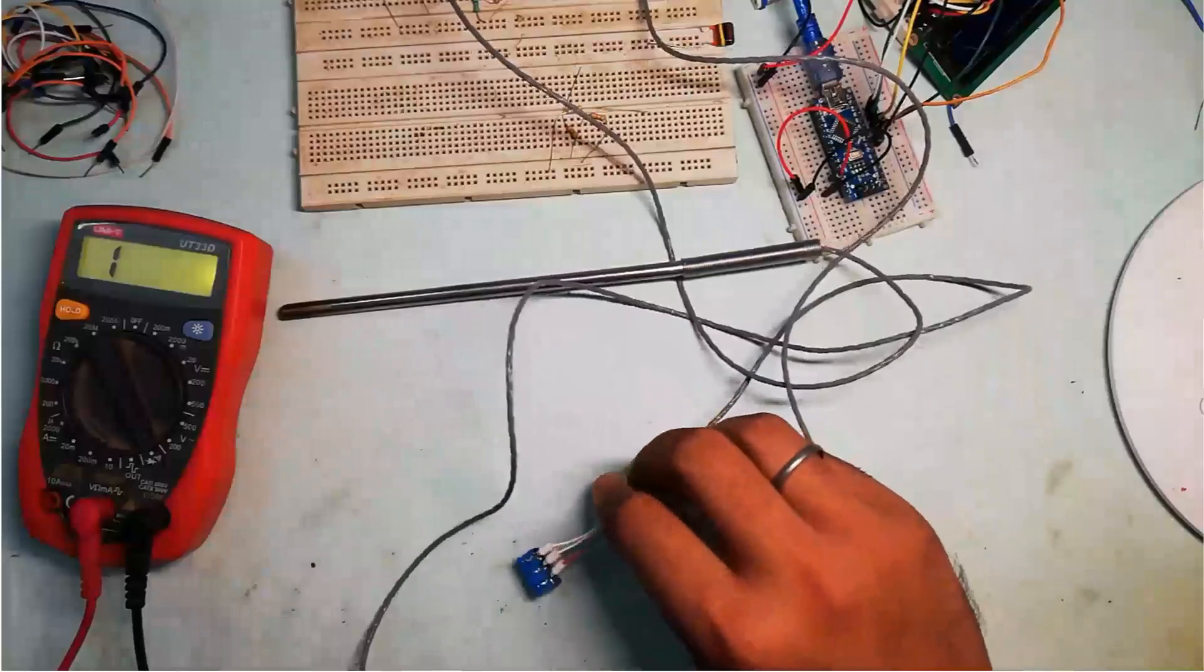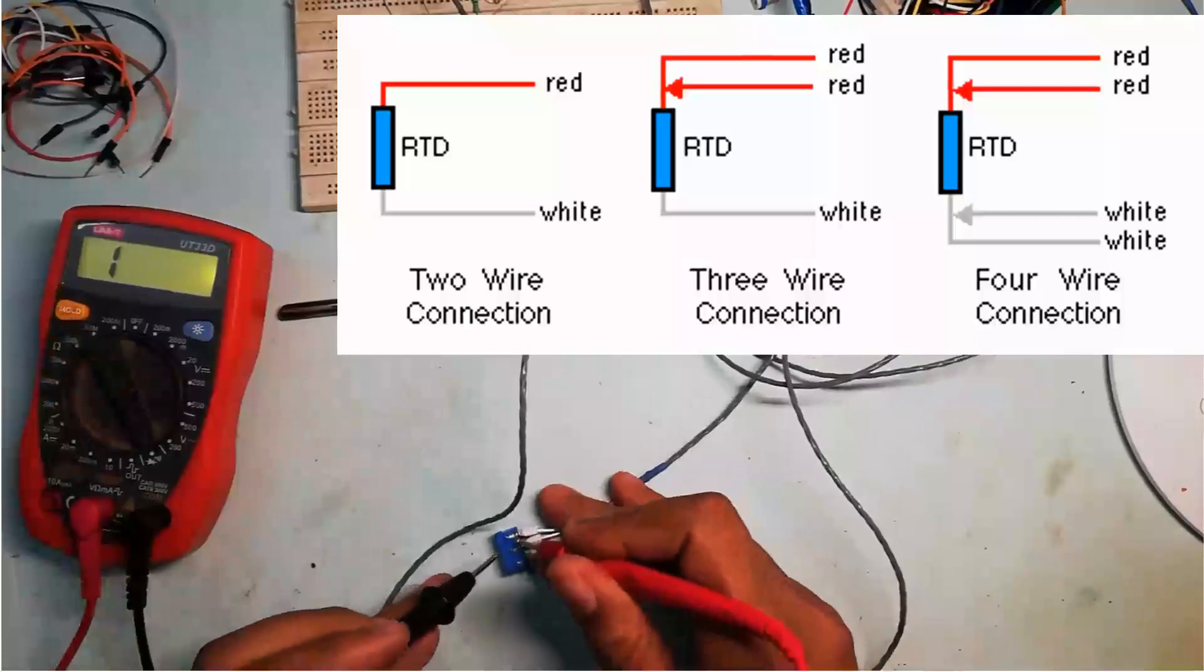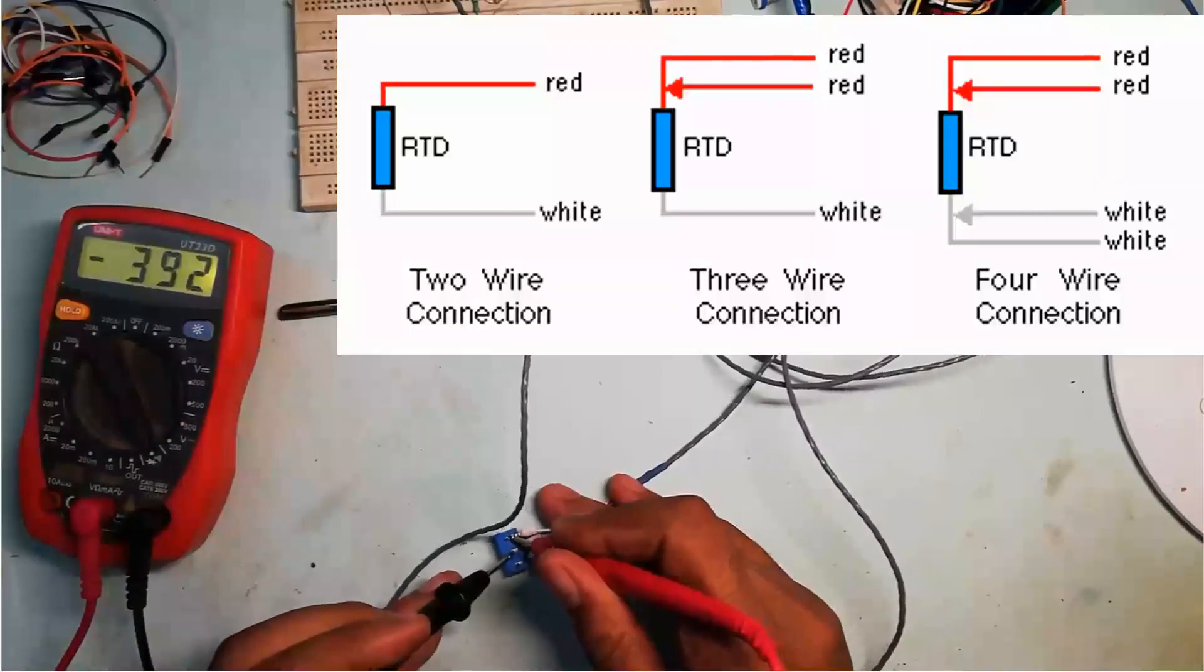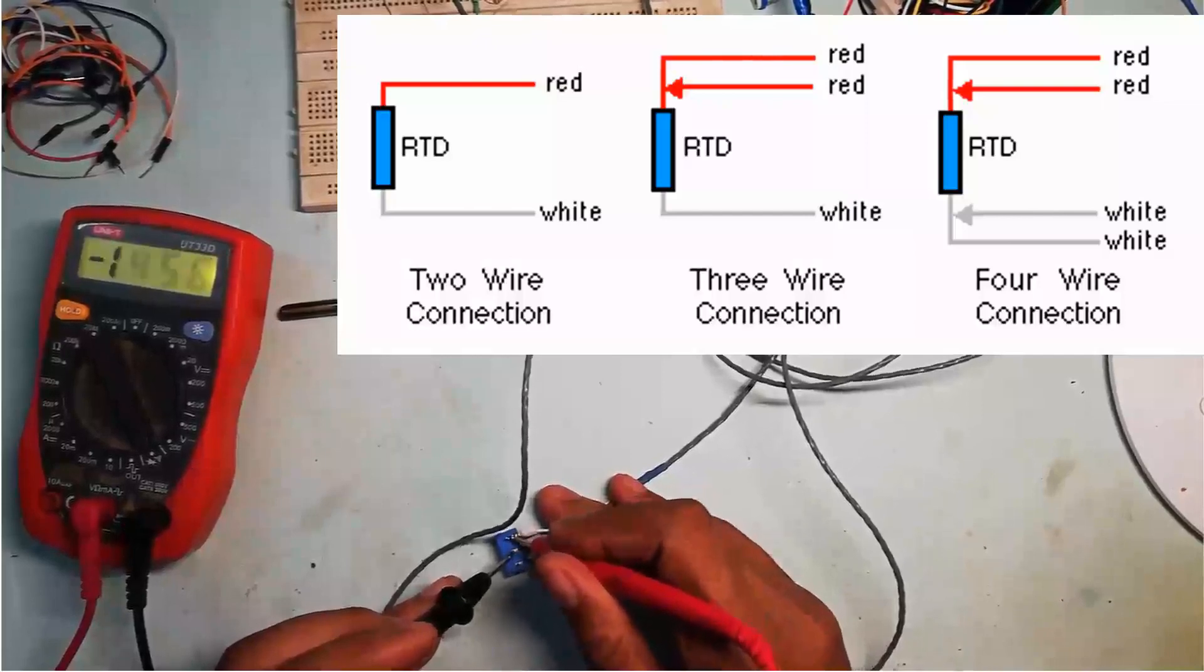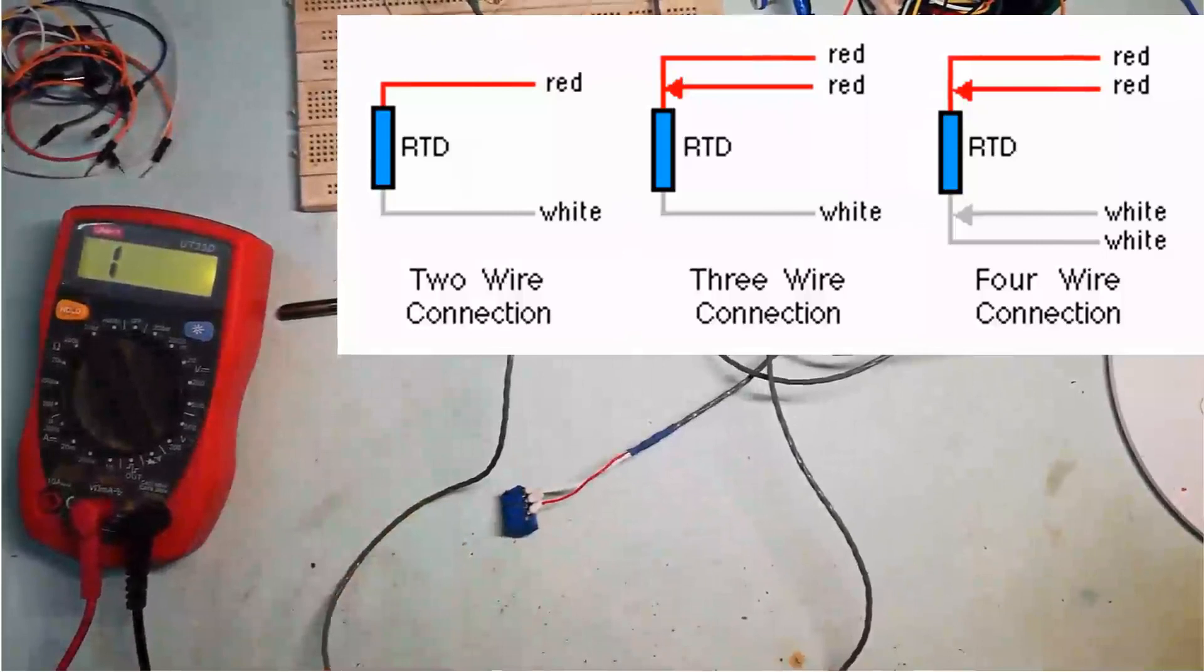Here I am going to interface a three terminal RTD sensor. For that, I am going to test the continuity. Adjust the multimeter in continuity test mode and check which two wires are shorted. As you can see here, these two wires are connected together. So if you have four wire RTD then two are for input and two are for output. They are shorted together.